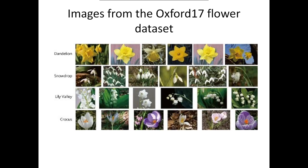First of all, it was necessary to choose a dataset to compare all these algorithms. We decided to use the Oxford 17 dataset. We train and evaluate our CNN model on the Oxford 17 category flower dataset, which is available online for free. This dataset contains 17 categories of common flowers in the UK, with 80 images for each class. Some of the pictures from the dataset are shown at the given slide.